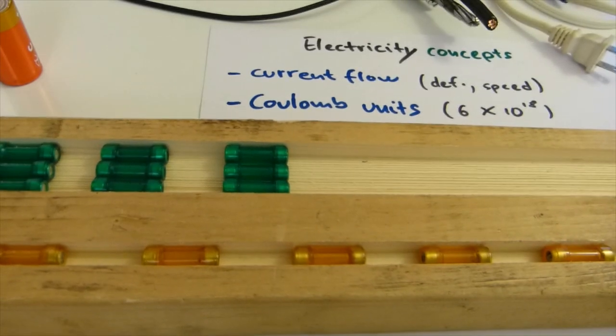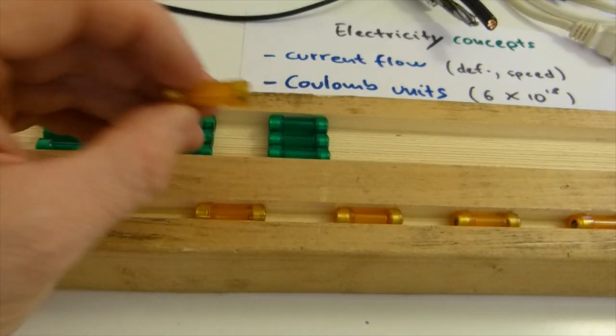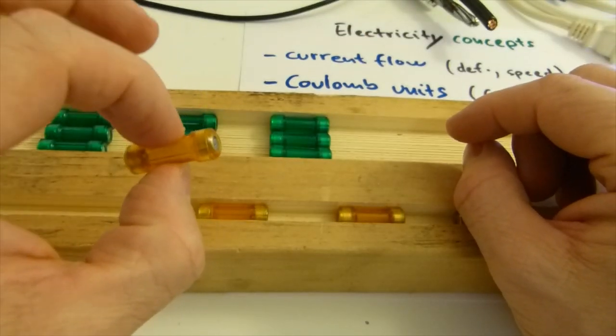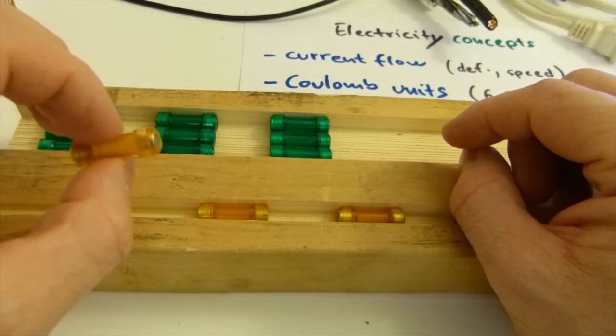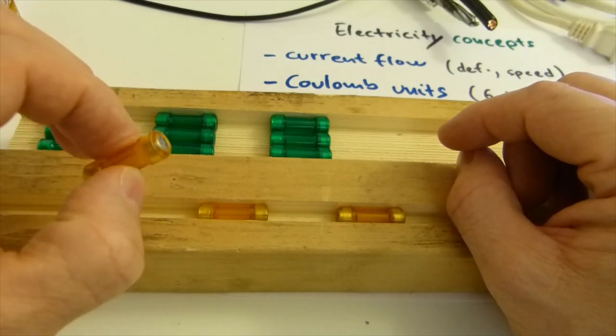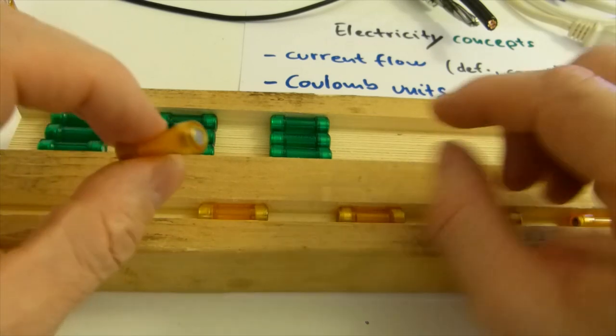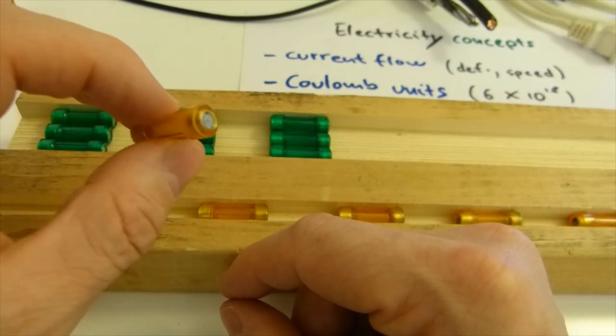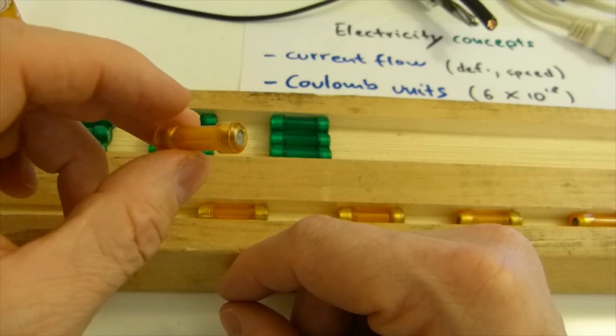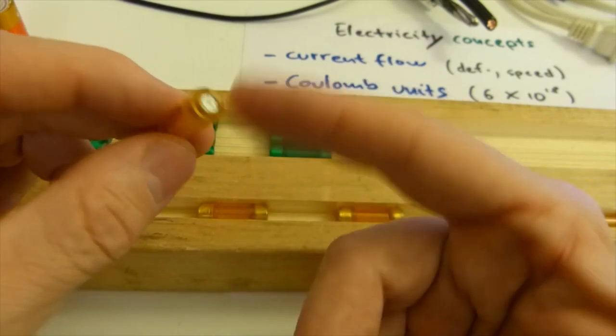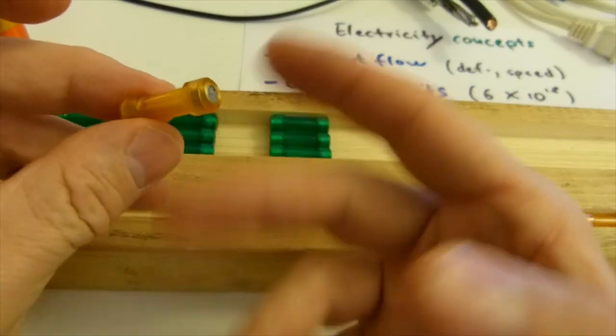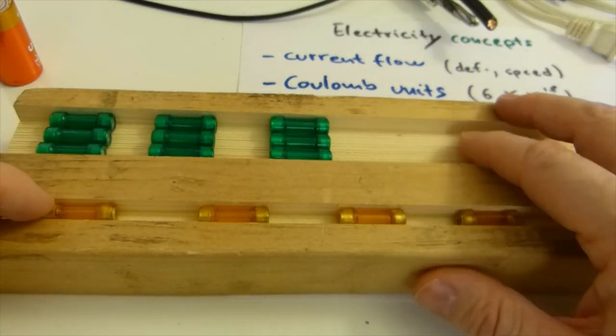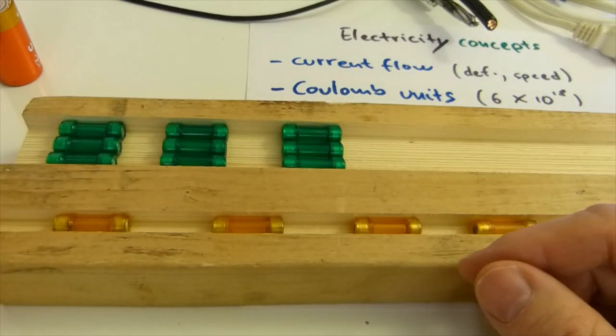The next concept is Coulomb. Now, in the previous example, I asked you to think of this magnet as a single electron. Now, electrons are not counted one at a time, because that takes forever, because you need trillions and trillions of electrons. So they count electrons in one unit. Think of it as this is a shipping container's worth of electrons, or a railway car worth of electrons, or a truckload worth of electrons.